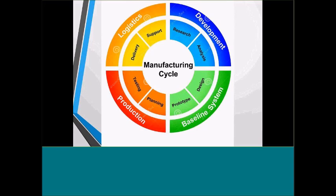When we think of the manufacturing cycle, we look at development, the baseline system, production, and logistics. It's almost like the PDCA cycle — plan, do, act, control — then go right back again. In development, we're looking at research and analysis: what are we going to be doing, what do customers require, and how do we improve our own product? Then we build prototypes, design, get into production — plan, make, test. Logistics is delivery and support.